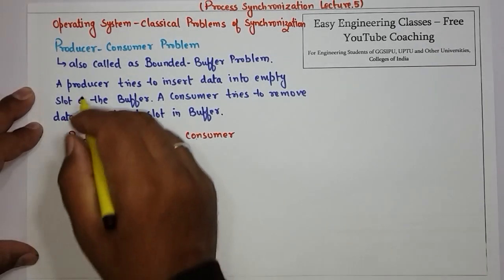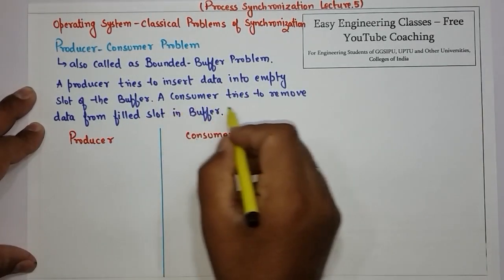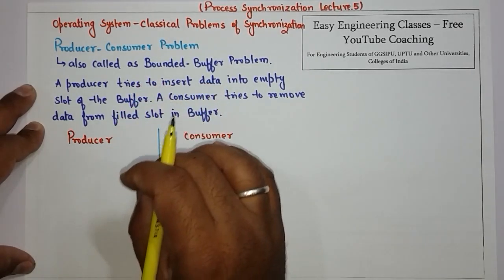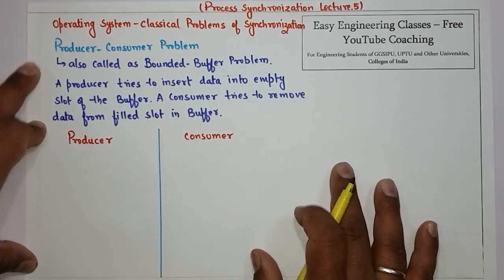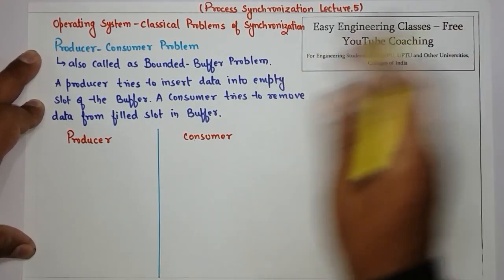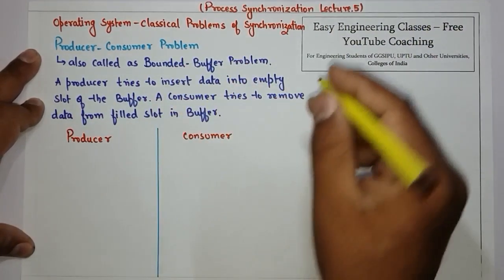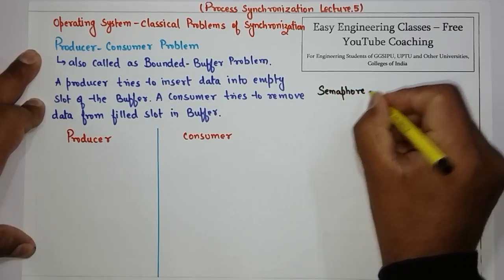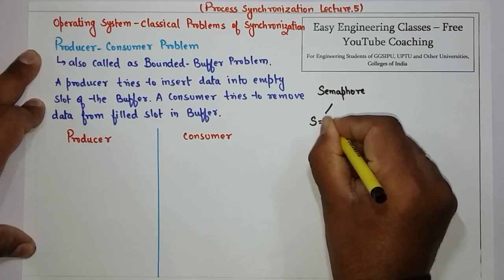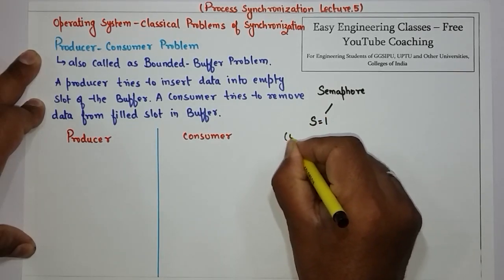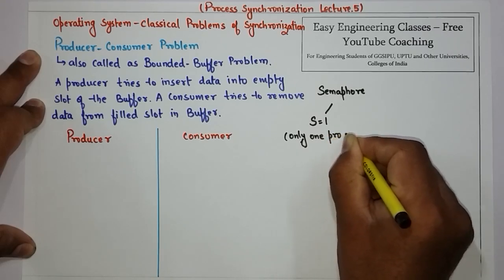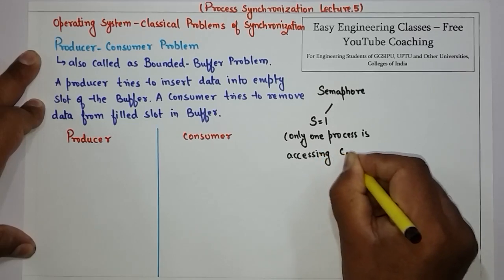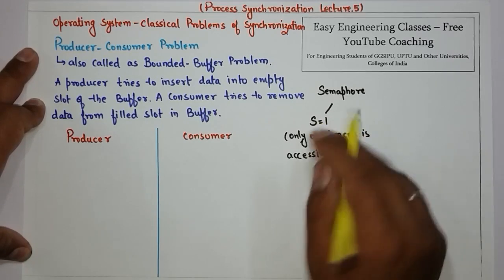So what does the problem say? A producer tries to insert data into an empty slot of the buffer, and a consumer is the process that tries to remove data from a filled slot in the buffer. If the producer and consumer are not working in sync, there may be some issues. The first semaphore we are using is S, and this semaphore ensures that only one process is accessing the critical section. It is the mutex semaphore for the mutual exclusion property.